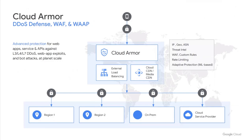Cloud Armor's protection against layer 3 and 4 volumetric and protocol-based attacks is always on when you deploy one of our global load balancing proxies. Users can configure security policies to further filter incoming requests based on attributes spanning layers 3 through 7 using our custom rules language, or leverage our pre-configured WAF rules, or deploy our machine learning-based adaptive protection capability to automatically detect and mitigate attacks. Cloud Armor is deployed at the edge of Google's network, where it has the opportunity to inspect requests and enforce policies upstream of customer workloads so we can drop unwelcome traffic before it has a chance to impact your applications and networks.